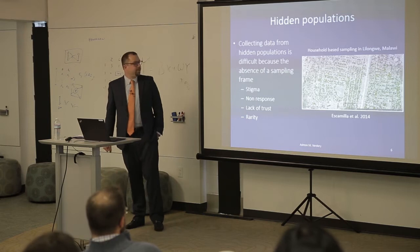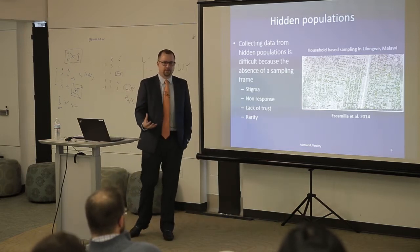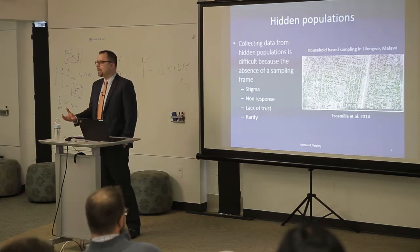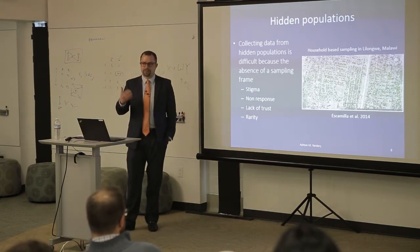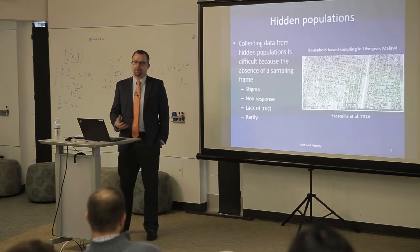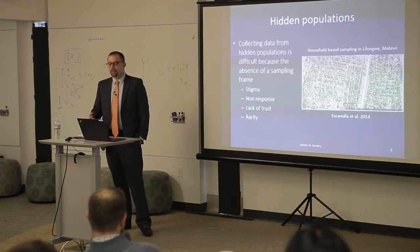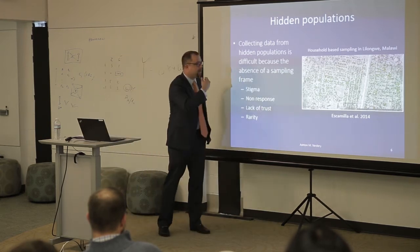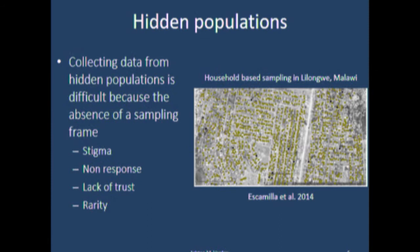The general concept of hidden populations is that there are lots of groups that are very difficult to survey. In the US, if you want to survey households, you might go to the census and they have a register of all households and you could pick individuals from that, giving you the normal inferential properties of random sampling. However, there are lots of times there isn't a list to sample individuals from. One example is a survey in Malawi where they were looking at a slum and the central government does not have a list of households there to sample from.